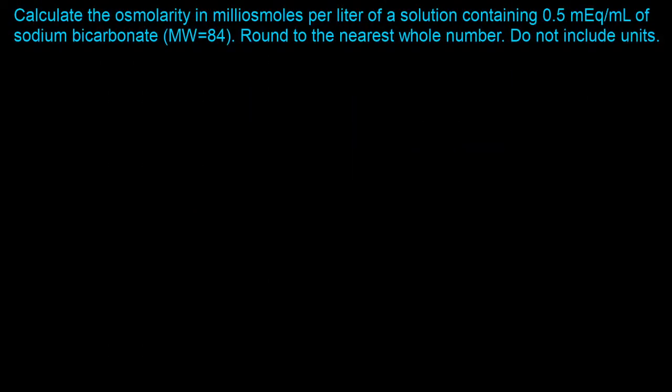The first question says: calculate the osmolarity in milliosmoles per liter of a solution containing 0.5 milliequivalents per milliliter of sodium bicarbonate. Round to the nearest whole number; do not include units. The governing equation states that milliosmoles per liter — which is the definition of osmolarity — equals the weight of substance in grams per milliliter divided by the molecular weight, times the number of particles, times 1000. The molecular weight has been given as 84.